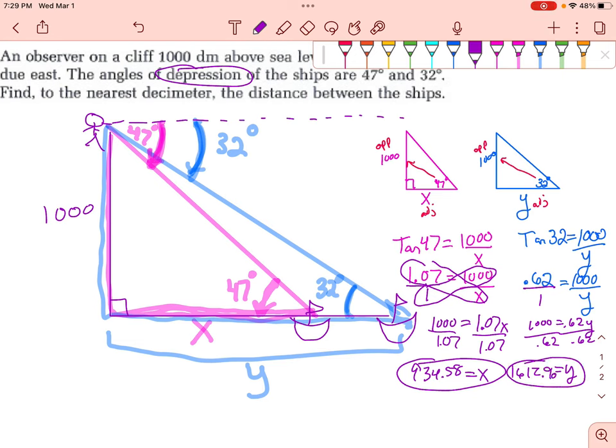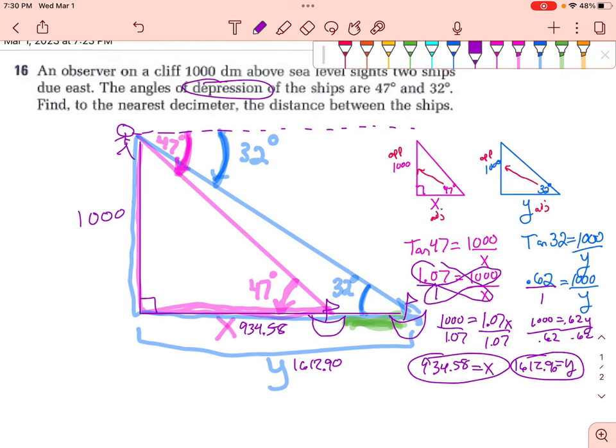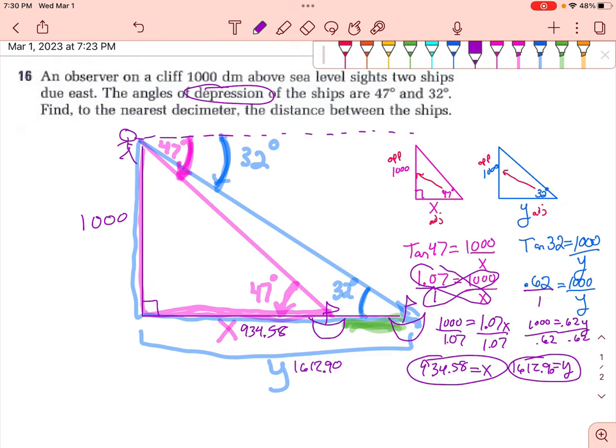But it's asking for how far apart these ships are. So if the pink part is 934.58, and the blue part is 1,612.90, to figure out the difference between them, you would just subtract. So you'd get about 680-something. So that's about how far apart the ships are. Thank you.